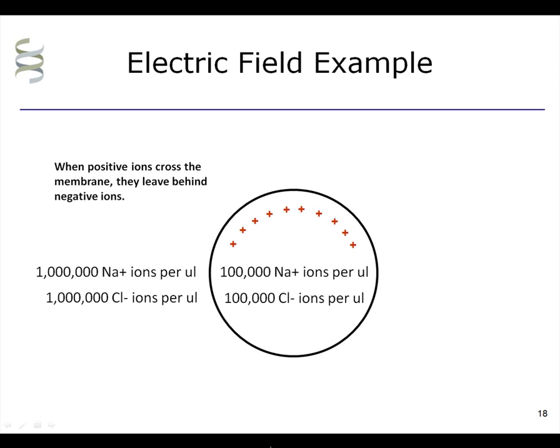However, in this example, sodium goes across the membrane, but chloride does not. When the positive ions cross the membrane, they leave behind negative ions. This imbalance of charge across the membrane will create an electric field.